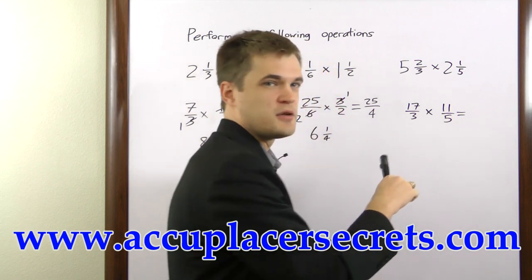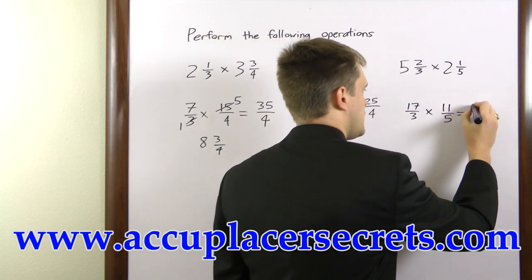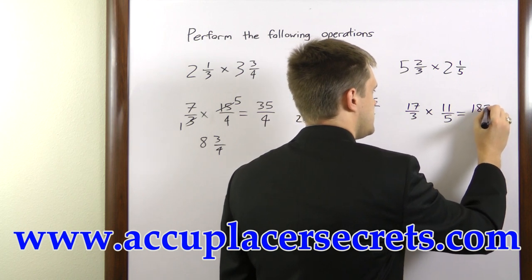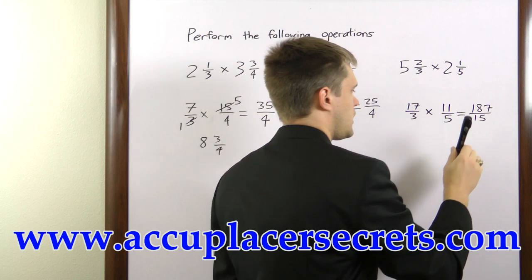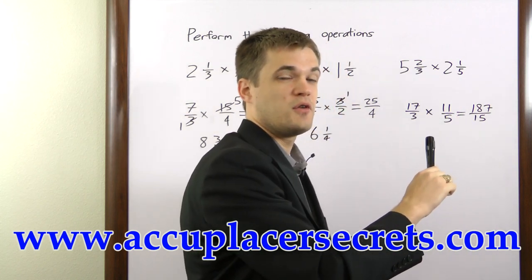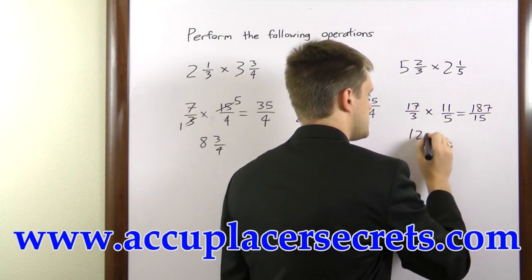There's nothing to cancel here, so we'll just go ahead and multiply. 17 times 11 is 187. 3 times 5 is 15. Now, 15 goes into 187 12 times, with a remainder of 7. So the answer here is 12 and 7/15.